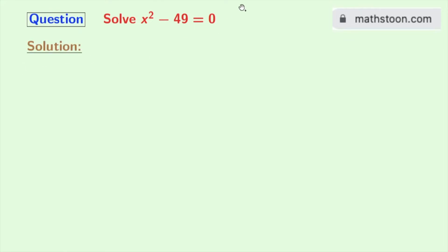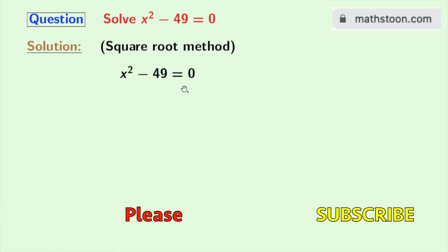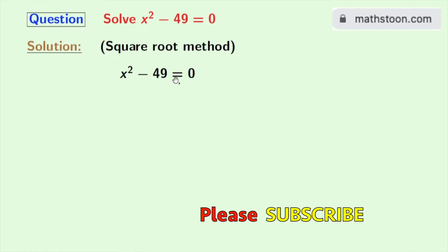We will solve this equation using two methods. The first method we will apply is square root method. Our given equation is x squared minus 49 is equal to 0. Now we will write this equation as x squared is equal to 49.